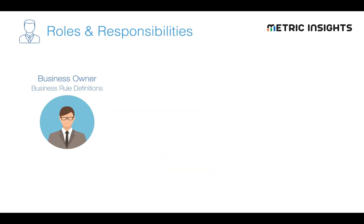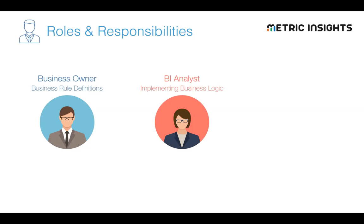Let's talk about roles and responsibilities. There are three primary roles involved. First, there's the business owner — folks responsible for defining the rules that govern how data should be interpreted. What defines sales? What defines revenue? What defines churn? All the main things measured in a report or dashboard have to have somebody defining what they mean, and the business owner is responsible for that scope of governance.